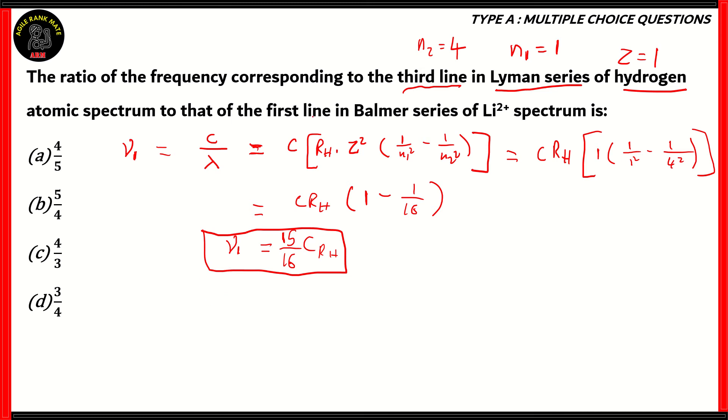Now, we have to find out the second frequency. For that, we're looking at the first line in the Balmer series of Li2+ spectrum. Now, lithium, whether it exists as an atom or an ion, will have an atomic number of 3. For the Balmer series, N1 will be equal to 2. And since we're looking at the first line after the base, N2 will also be equal to 3. So, first line of the Balmer series of the Li2+ spectrum, you would have N2 equals 3, N1 equals 2, and the value of Z is equal to 3.